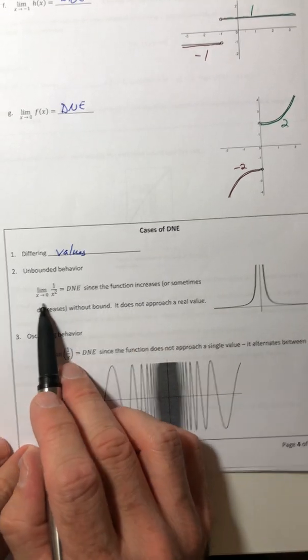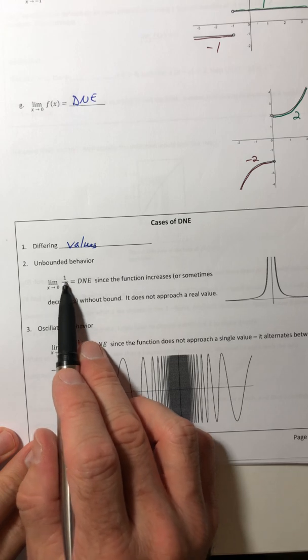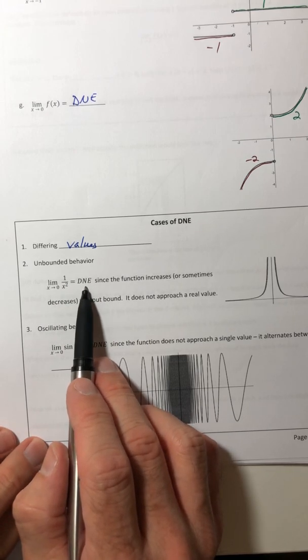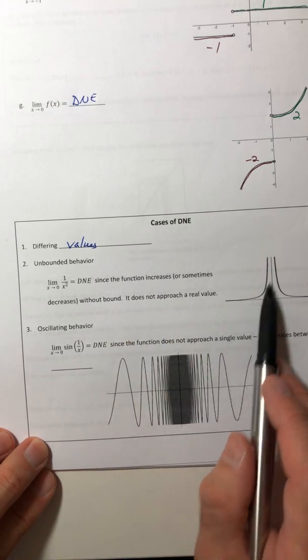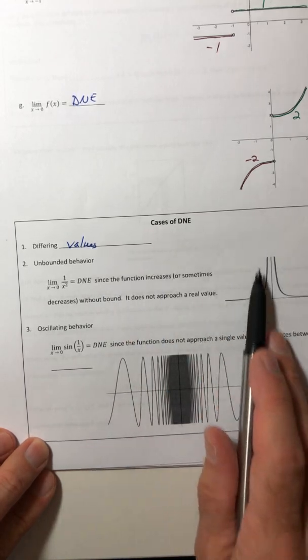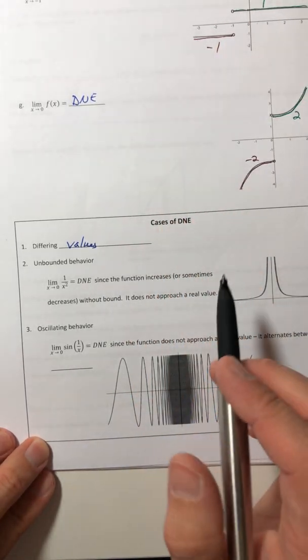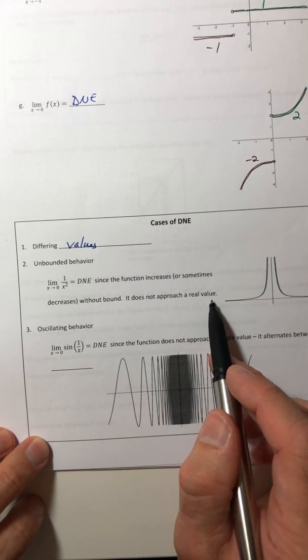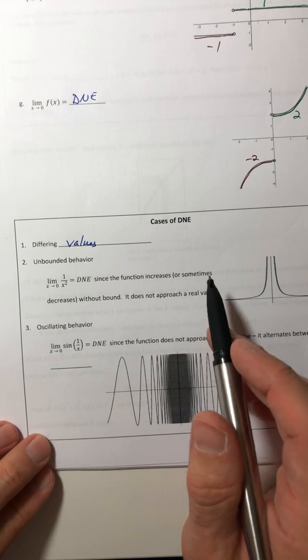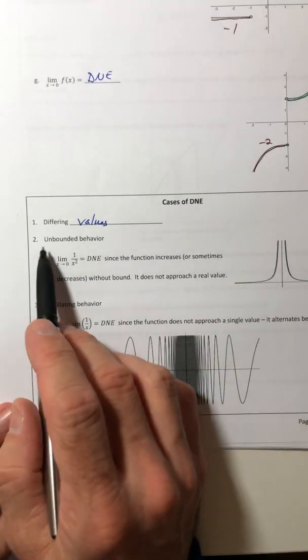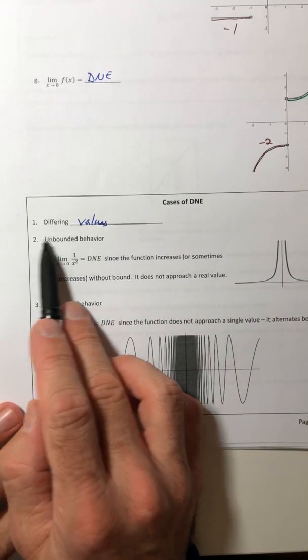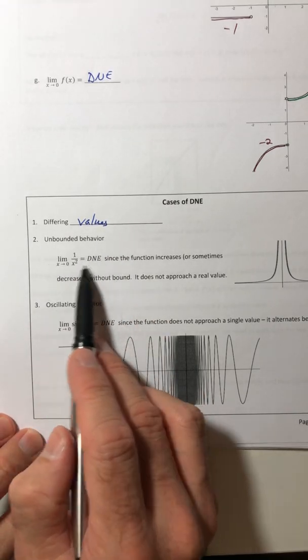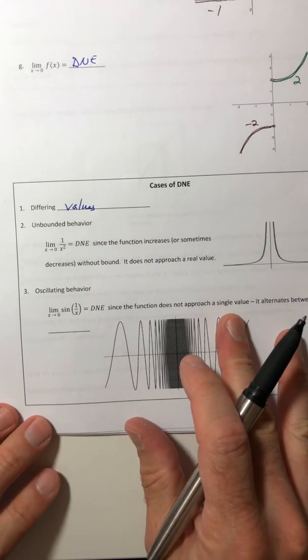The second type is when it's unbounded. So like if we took the limit as X approaches zero of one over X squared, that does not exist either because the function increases without bound. It just keeps shooting up and up and up. So it does not approach a real value or a real number. We'll see in a later section how we treat this, but for now it's really going to be a DNE because we don't know how to really deal with it.